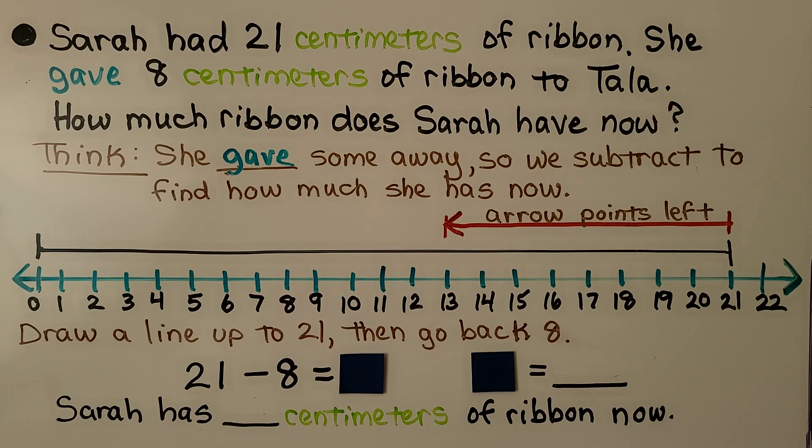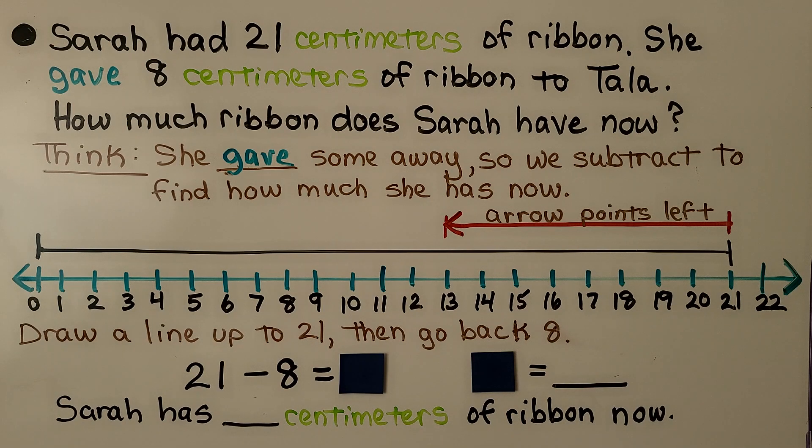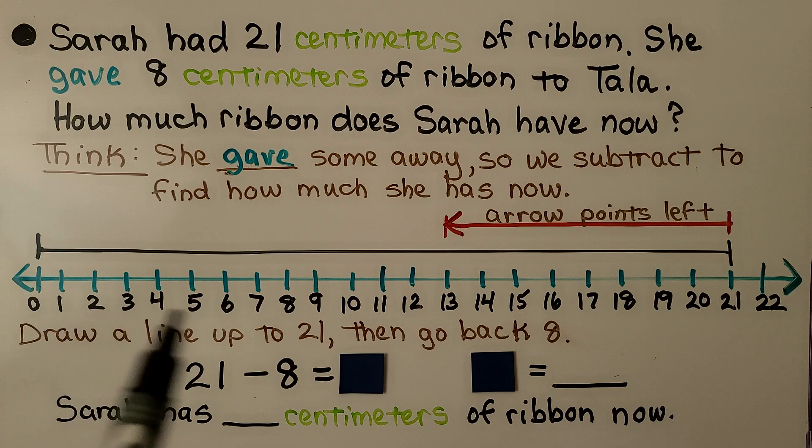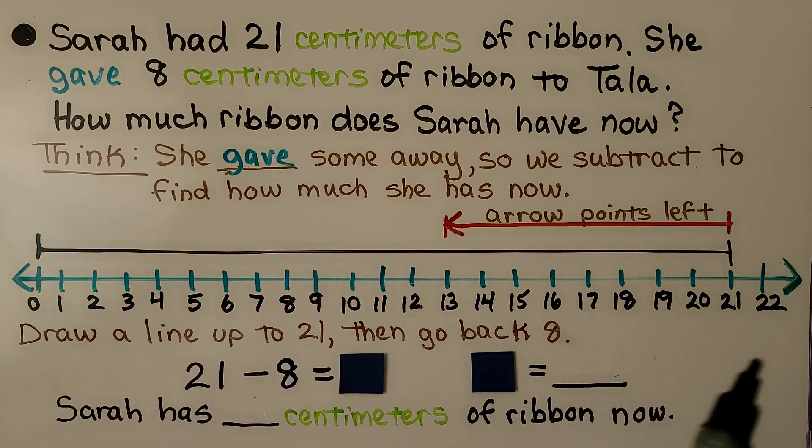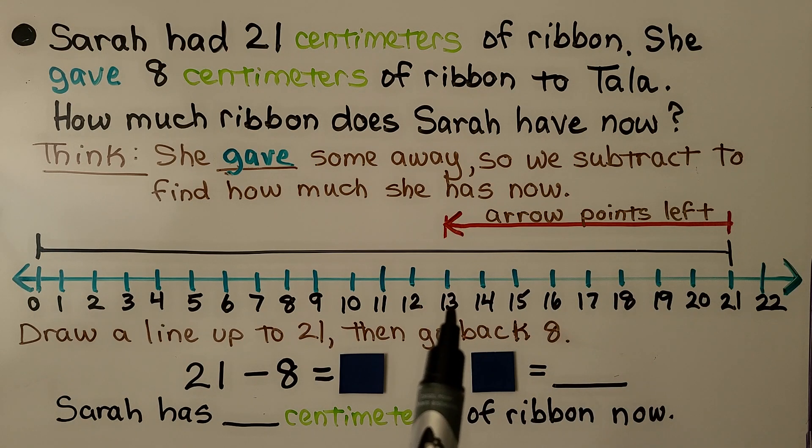Here we have a word problem, and it says Sarah had 21 centimeters of ribbon. She gave 8 centimeters of ribbon to Tala. How much ribbon does Sarah have now? We think she gave some away, so we subtract to find how much she has now. We draw a line up to 21, because that's how much she had. Then we go back 8, and that puts us at 13.